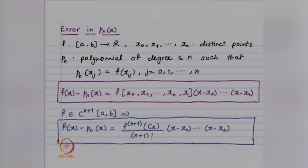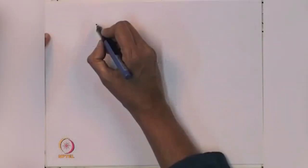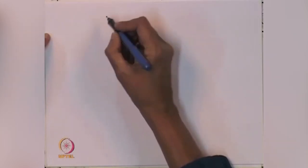Today we are going to replace the interval a to b by the sub-interval t_i to t_{i+1}. In each sub-interval we have a polynomial of degree less than or equal to k, and we are going to join these polynomials together. Let us first look at the case of a linear polynomial.